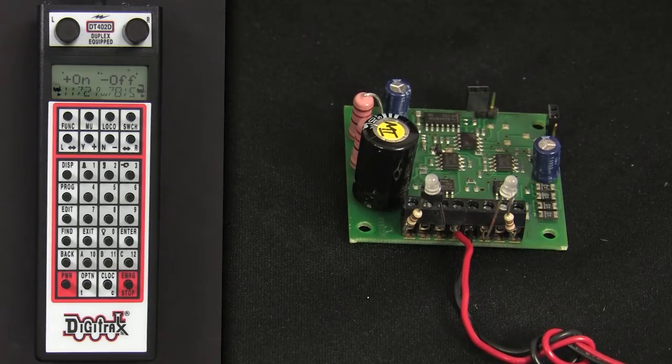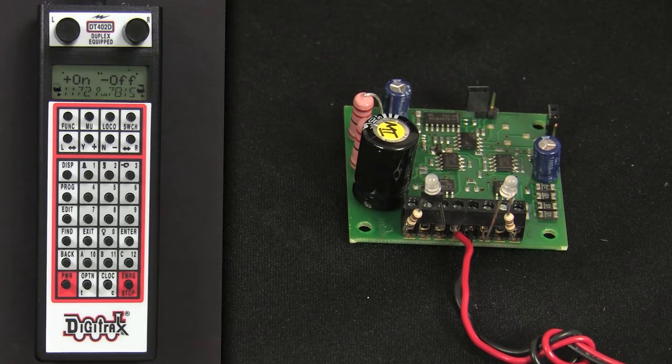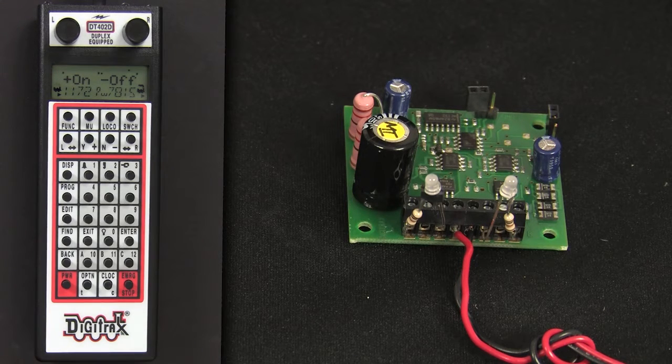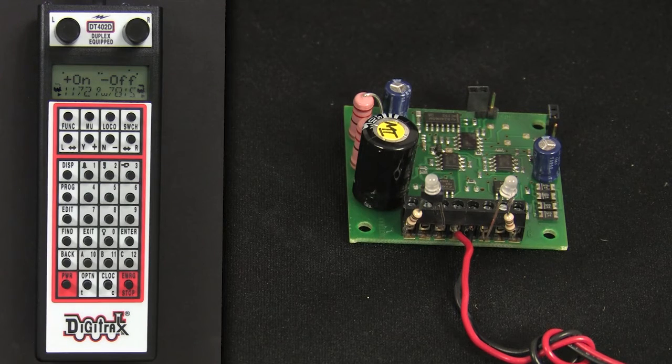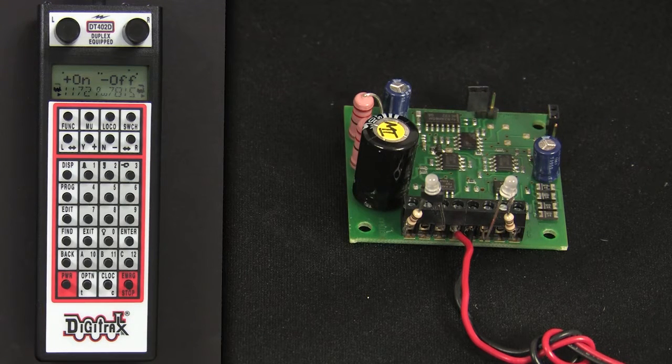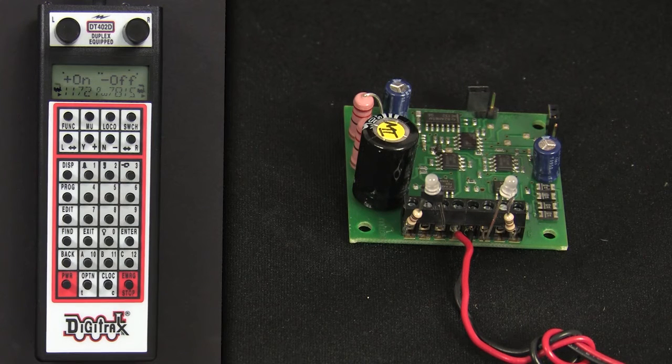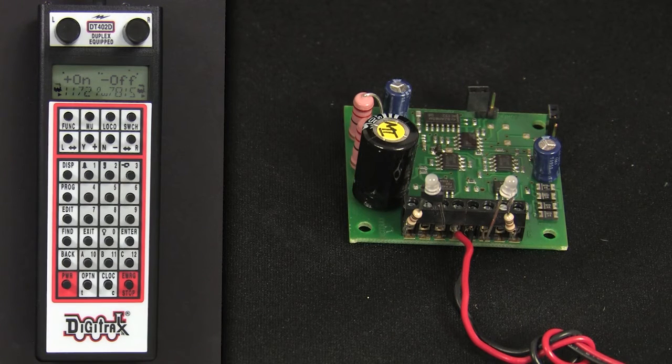This video shows how to program the DS-52 stationary decoder. This decoder is designed to control two slow motion turnout machines such as Tortoise, SwitchMaster, or Circuitron, or two solenoid type switch machines such as Pico, Atlas, or other bipolar turnouts.